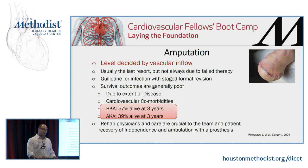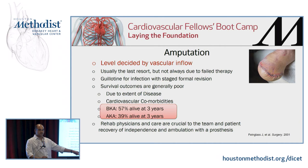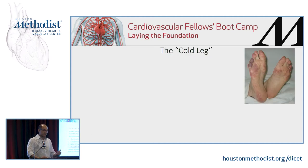Amputation is something we want to avoid - we like to call ourselves limb salvage guys. The level of amputation is decided by the inflow: if you have bad inflow, you will have a higher level of amputation. Patients sometimes tell me, 'If I get an amputation, I'm going to die.' I say no - if you get an amputation, you have bad disease that's going to affect you down the line. It's not the amputation itself. The higher the level of amputation, the worse the disease process already going on.